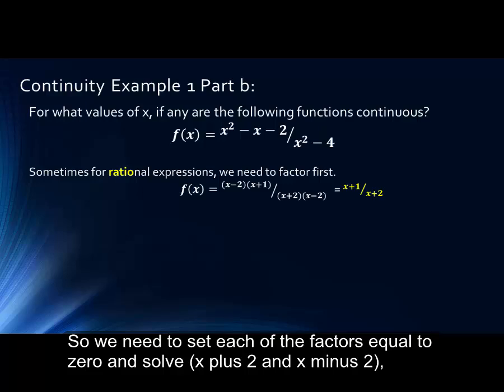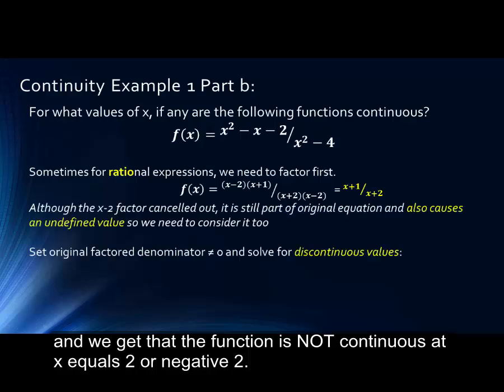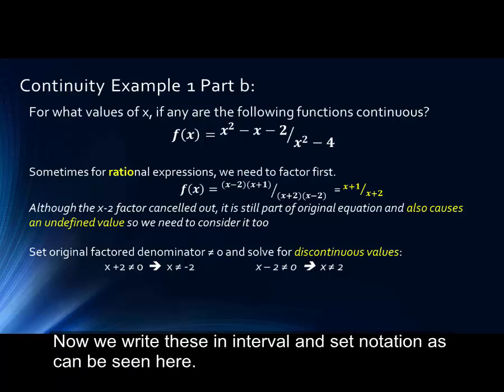So we need to set each of the factors equal to zero and solve the factors in the original problem: x plus two and x minus two from the original function. We get that the function is not continuous when x equals two or x equals negative two. Now we write these in interval and set notation as can be seen here at the bottom of the screen.